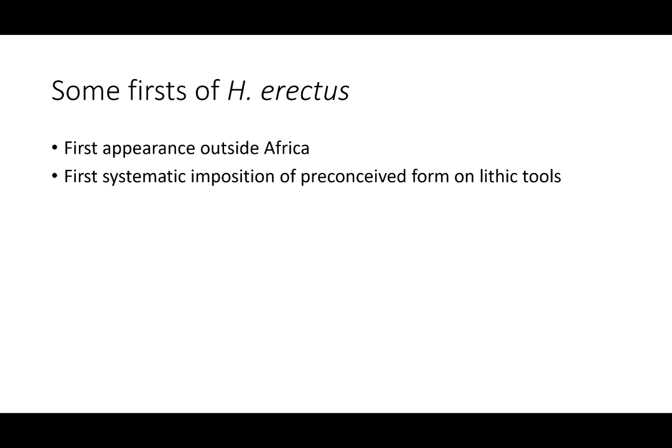That's the more scientific way of saying that hominids all over were making tools that all looked alike. Let's add another one: the first basically modern human body proportions. We saw the skeletal differences between Ardipithecus and Australopithecus — the divergent big toe, the changes in hand and arm proportions, and changes in dentition too. But with genus Homo, you see skeletons that have basically modern human body proportions.